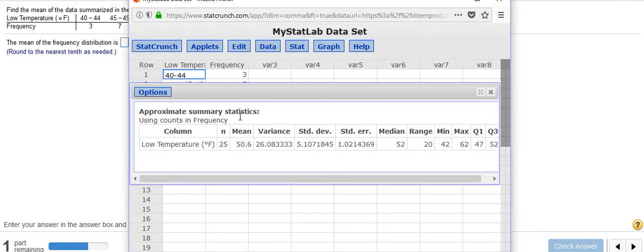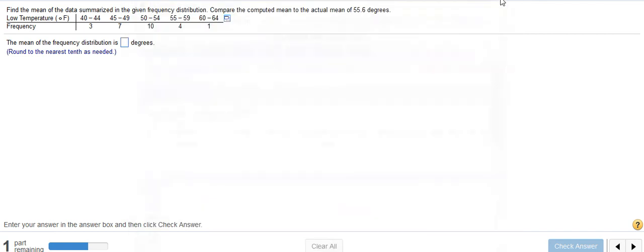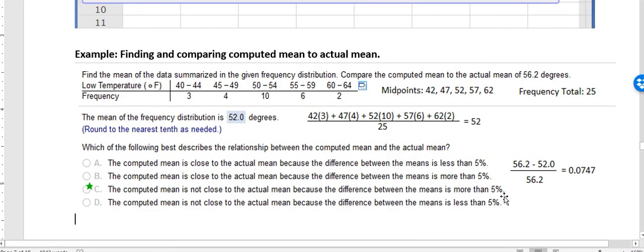So you can do that on StatCrunch. You can also calculate the midpoints on your own and put them into your calculator. That's up to you. I just want to show you two different ways to complete that problem. And the other piece of that problem that I think is probably most important is this idea of the difference. People miss that a lot. So I want to make sure and go over that.